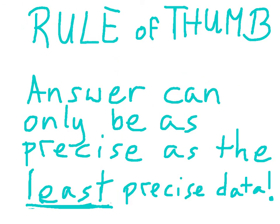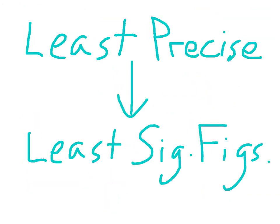Remember, the rule of thumb is that the answer can only be as precise as the least precise data. And the least precise is that data with the least number of significant figures.